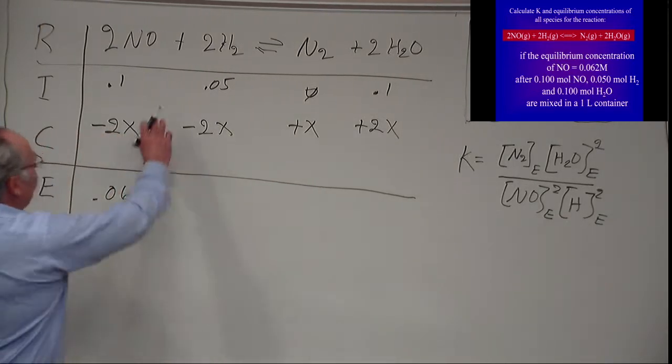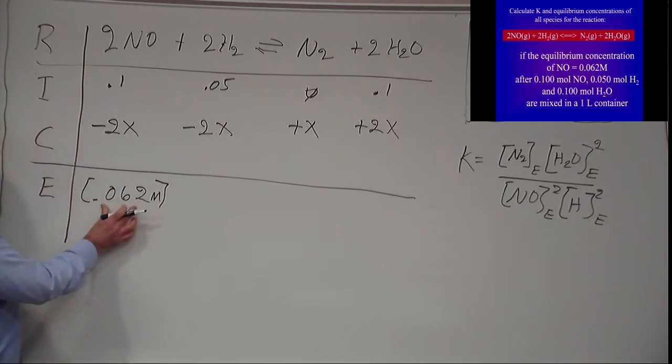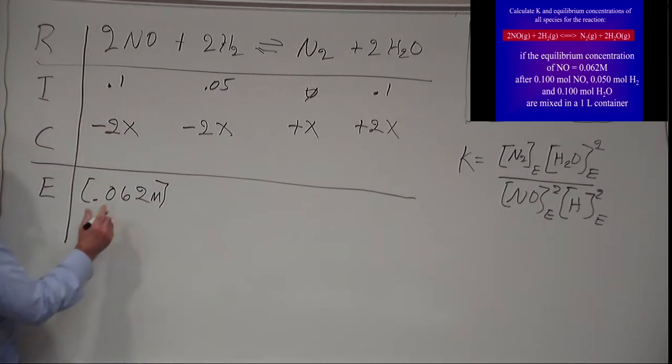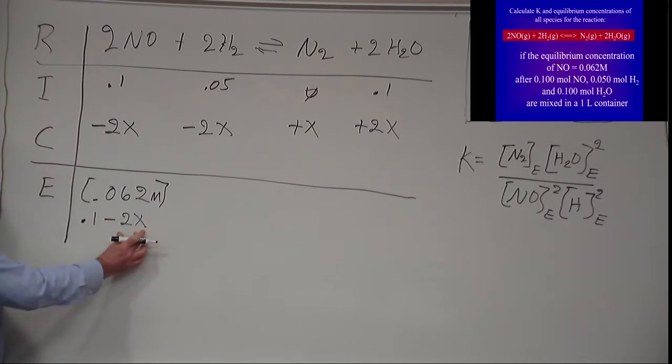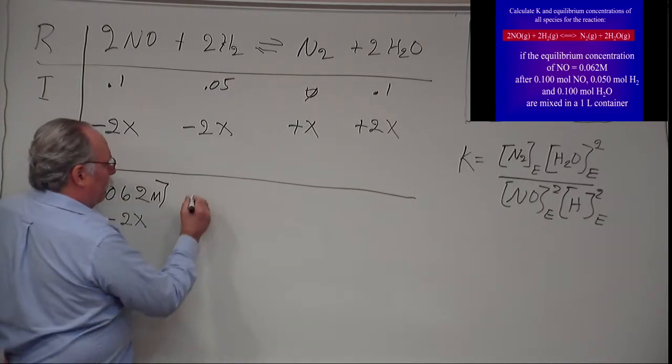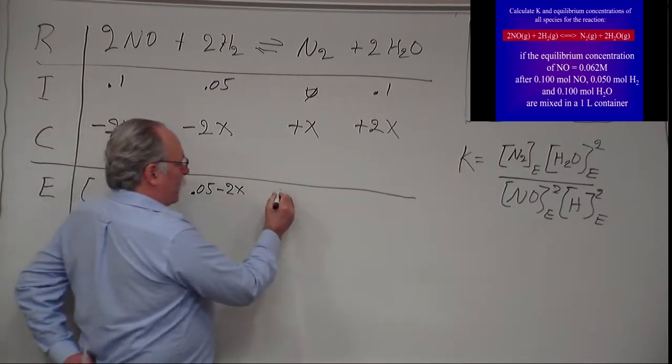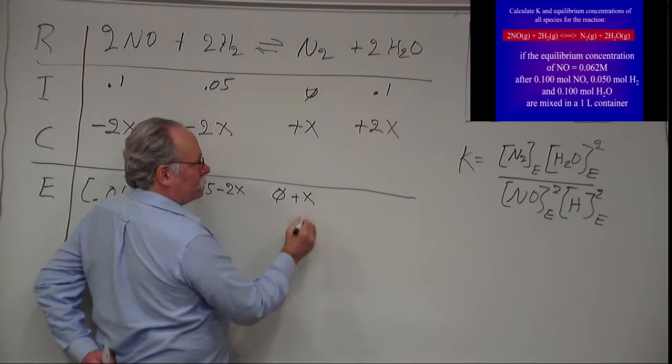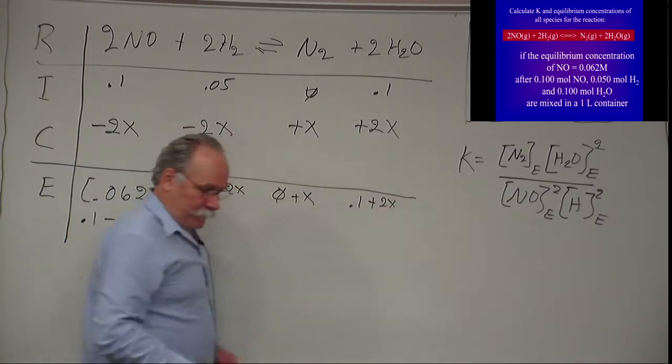Now what I now do is say at equilibrium what do I have. Incidentally, since I was already given this concentration, I can say that what I have at equilibrium is what I started with minus what I consumed. So what I started with minus what I consumed is 0.062 because I had to be given one of these at equilibrium to solve this. So here I have what I started with 0.05 minus 2X, what I started with, I'll just write 0 plus X, what I started with plus 2X.